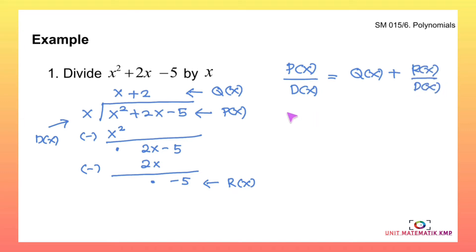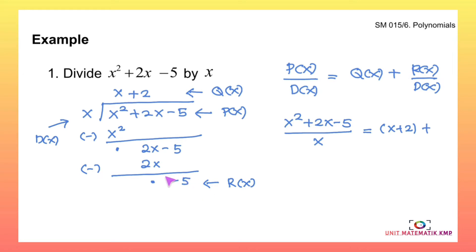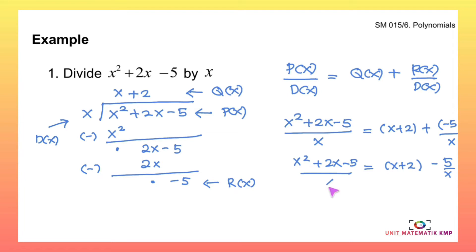Substituting the values: p(x) is x squared plus 2x minus 5 over d(x) which is x, and this equals quotient x plus 2, plus remainder negative 5 over divisor x. Simplified, this gives x plus 2 minus 5 over x, which equals x squared plus 2x minus 5 over x. This is our final answer after performing long division.